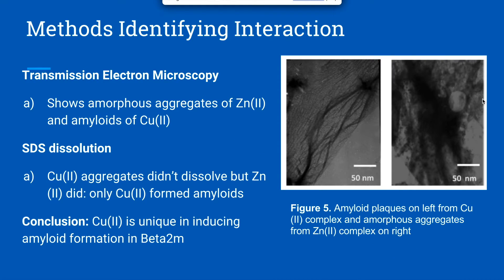The third method used is transmission electron microscopy, where figure 5 shows that amyloid plaques only form on the left for the copper complexes, and amorphous plaques form on the right for zinc complexes. SDS solution was also used to dissolve the complexes and show if true amyloids formed, and they only formed for the copper. Our conclusion is that copper 2+ is unique in inducing amyloid formation.